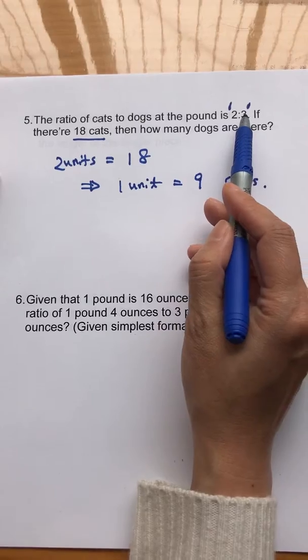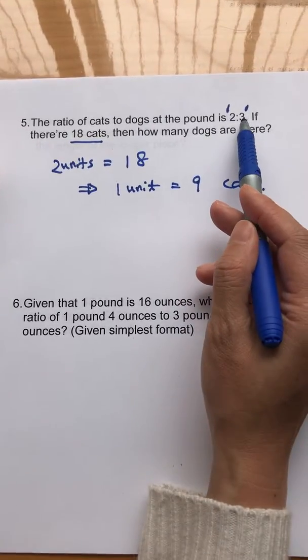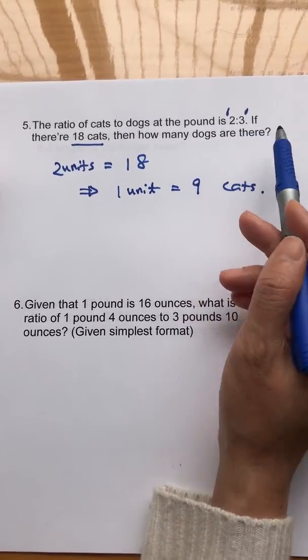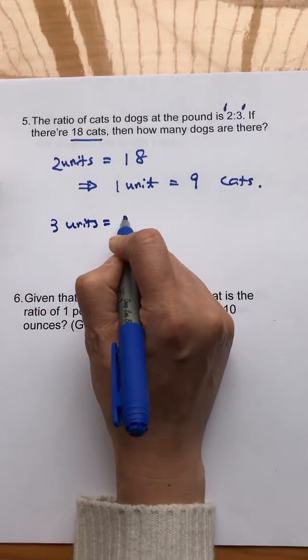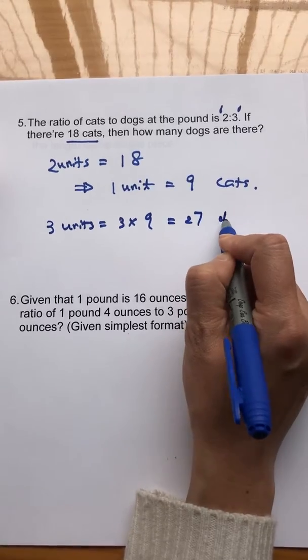And so if one unit is nine, and then the number of dogs are three units, so three units equals three multiply nine equals 27 dogs.